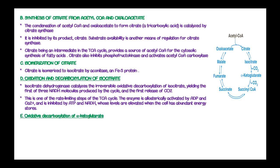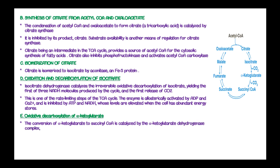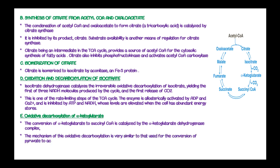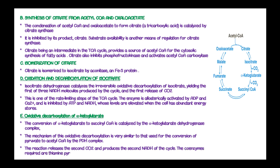Another step is oxidative decarboxylation of alpha-ketoglutarate. The conversion of alpha-ketoglutarate to succinyl-coenzyme A is catalyzed by alpha-ketoglutarate dehydrogenase complex. The mechanism of this oxidative decarboxylation is very similar to that used in conversion of pyruvate to acetyl-coenzyme A by the PDH complex. The reaction releases the second carbon dioxide molecule and produces the second NADH of the cycle. These coenzymes require thiamine pyrophosphate, lipoic acid, FAD, NAD+, and coenzyme A.